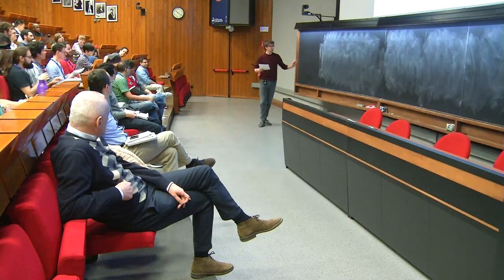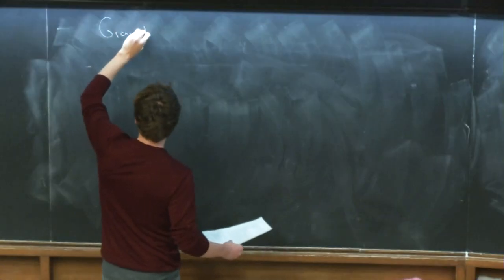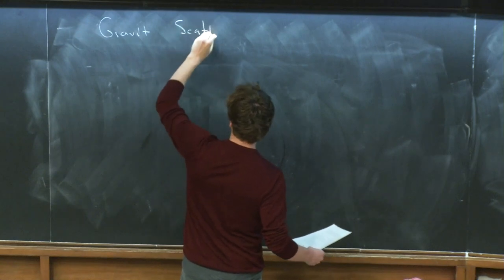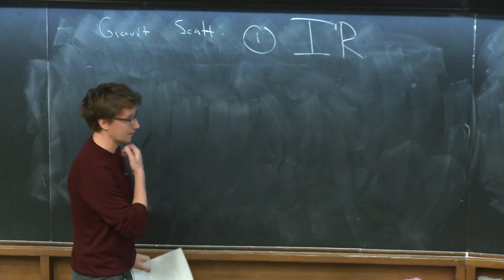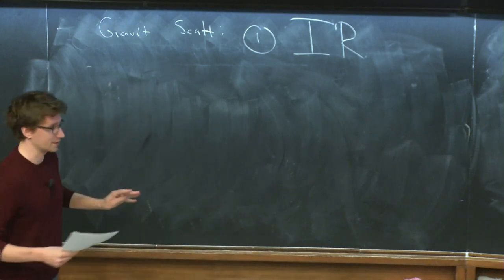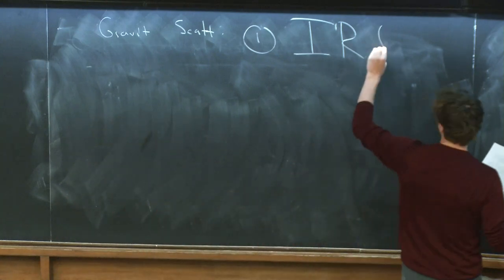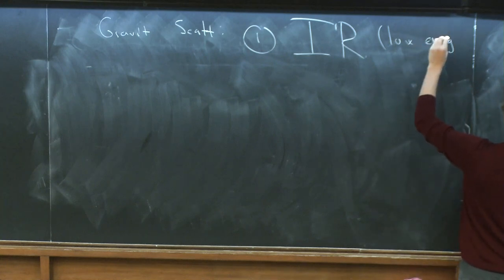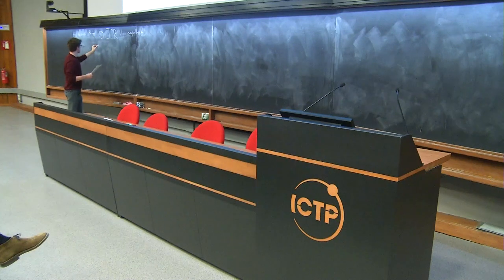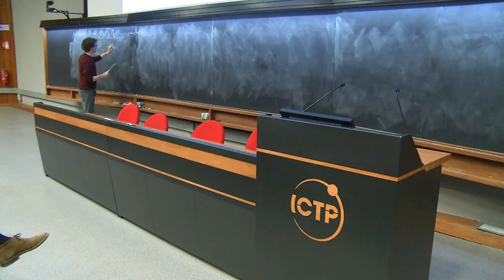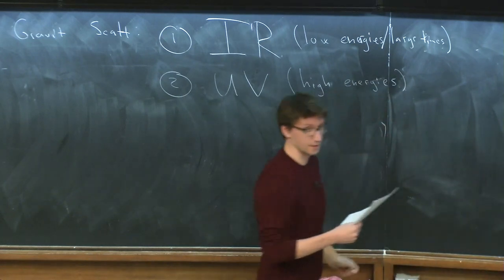My lectures have two parts, and they're quite separated. I will be talking about gravitational scattering and several aspects of it. The first part will deal with IR — by IR we mean low energies and late times, large times. The second part deals with the UV, so high energies. They're quite disconnected, as you can imagine, even though maybe in reality they are less disconnected than they seem.